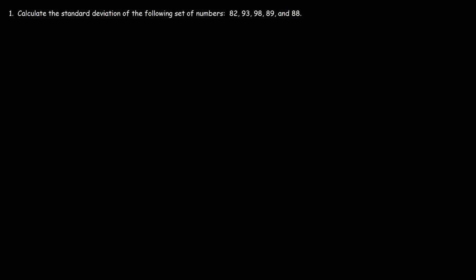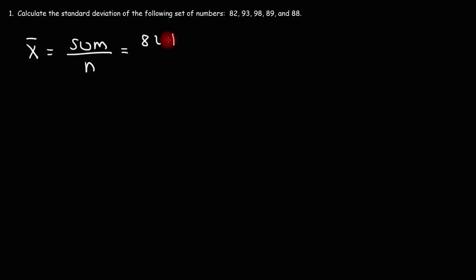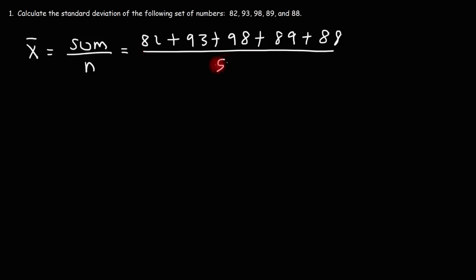In this video, I'm going to talk about how to calculate the standard deviation of a set of numbers, quick and simple. So the first thing you want to do is calculate the mean. X-bar represents the mean of the sample, and the mean is basically the sum of the numbers divided by the size of the sample. So we're going to add up the five numbers that we have: 82 plus 93 plus 98 plus 89 plus 88, and since we have five numbers, we are going to divide this by five.